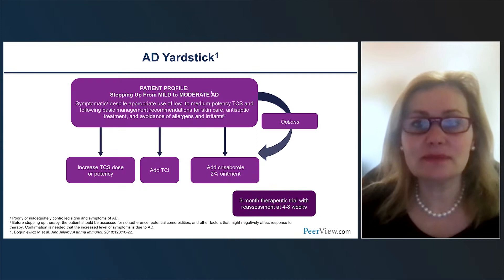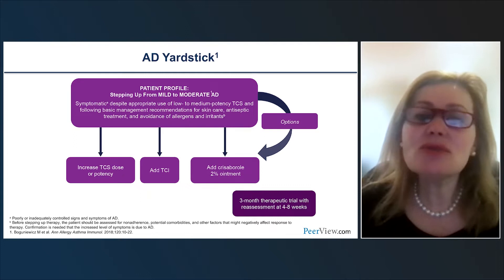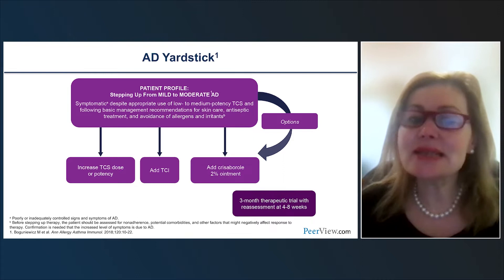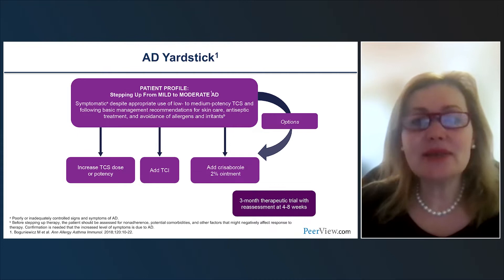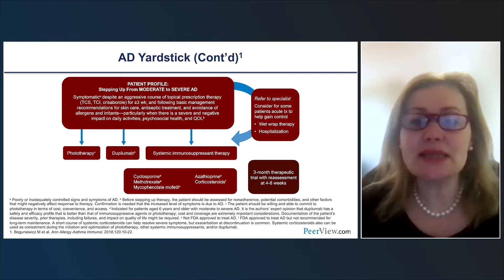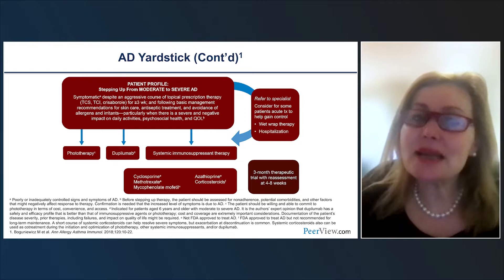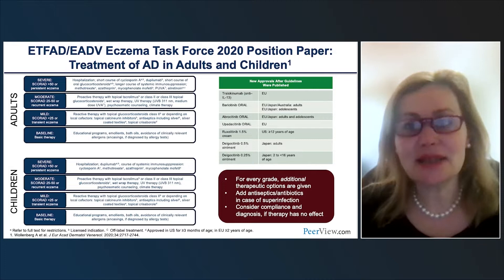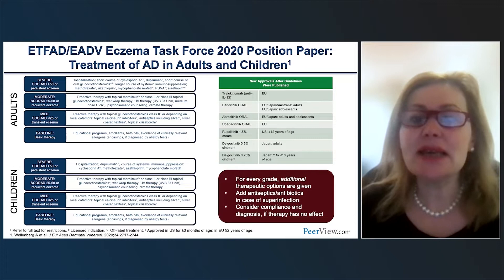There are several guidelines and also publications in lieu of guidelines, such as the yardstick, because guidelines are only updated every few years and often don't incorporate newer treatments. The AD yardstick tried to incorporate newer treatments such as dupilumab and crisaborol that were not yet in guidelines. The same happens with European guidelines — on one hand you have guidelines, and on the other you have position papers trying to incorporate newer treatments.